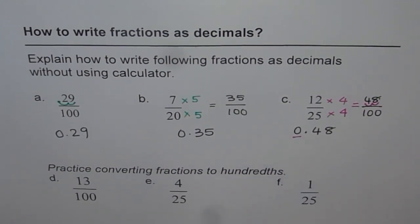Follow these steps. And now practice converting fractions to hundredths. These are all hundredths. So 13 over 100 is clear: 0.13. How about 4 over 25? Follow this method: multiply by 4 and write down your decimal number. 1 over 25 is the same as this, except for the 1 in the numerator. Try it out.